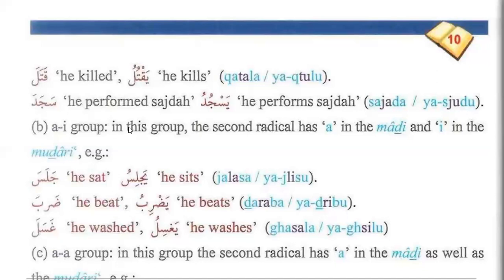The second group is the fatah-kasara group. In this group, the second radical has fatah in the madi and kasra in the mudari. Example: jalasa — he sat; yajlisu — he sits.